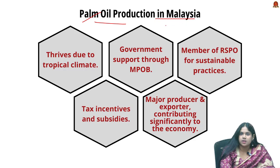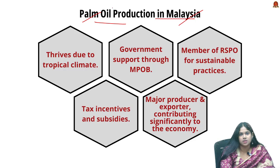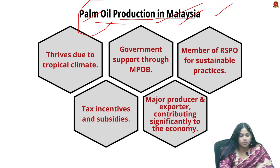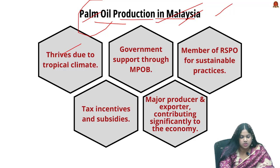Moving on to palm oil production in Malaysia — Malaysia is the second largest palm oil producing country, and India is an importer. Any effects in palm oil production will have a direct impact on countries like India in terms of trade. Malaysian palm oil production thrives due to its tropical climate with consistent rainfall and warm temperatures, ideal for oil palm cultivation.